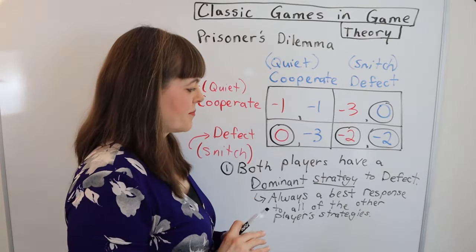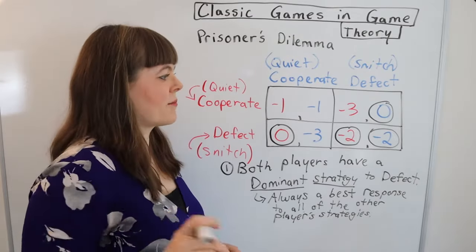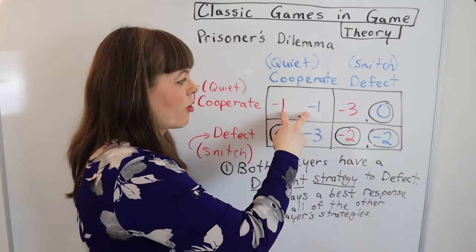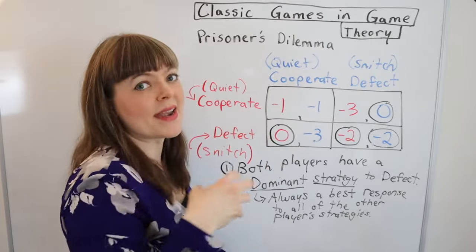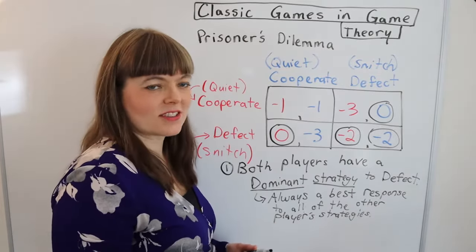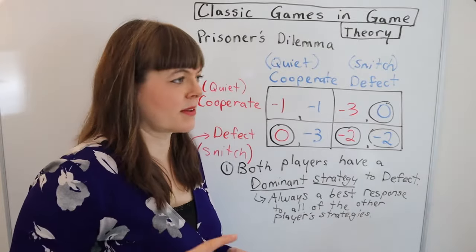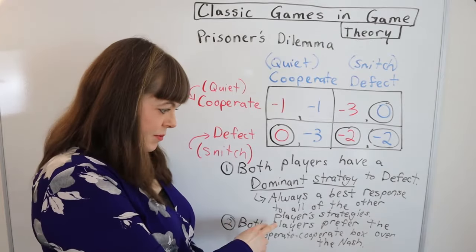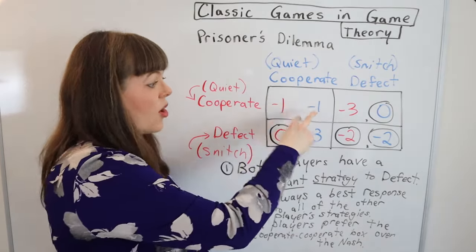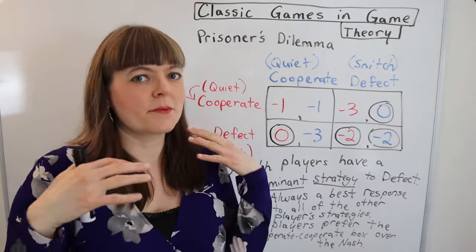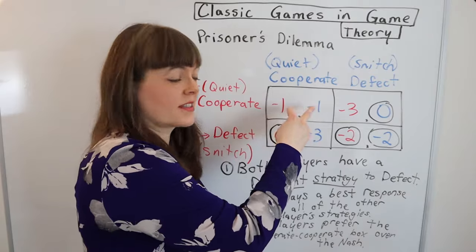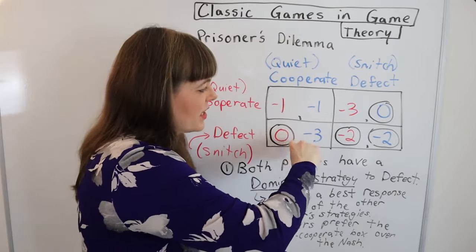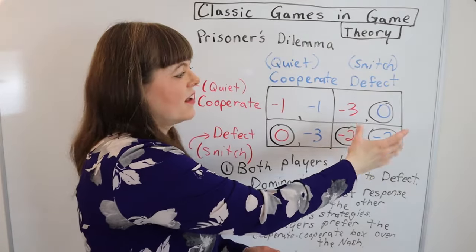And then the second trait of a prisoner's dilemma is that both players are better off in the cooperate-cooperate scenario. Or in the scenario where both are playing their dominated strategy. Where dominated strategy is a strategy that's never a best response. The way I put that here is that both players prefer the cooperate-cooperate box over the Nash equilibrium. And of course, the big outcome here is that it's really, really hard to sustain cooperation because the players have an incentive to defect, which will generally lead to a collapse toward the defect-defect Nash equilibrium.